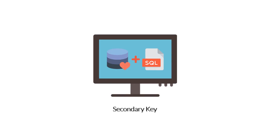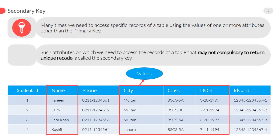Hello guys, welcome to this lecture on key concepts. Our topic is secondary key. We know that primary key is used to access only unique records and it is not null. Many times we need to access specific records of a table using the values of one or more attributes other than the primary key. Such attributes, which may not necessarily return a unique record, are called the secondary key.